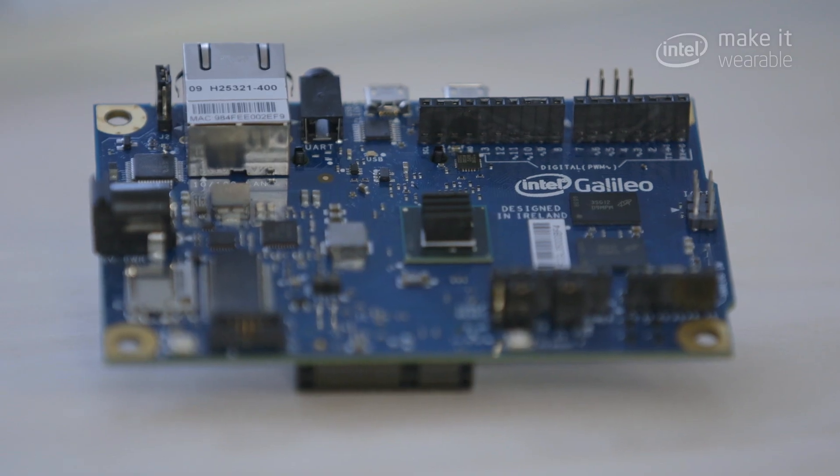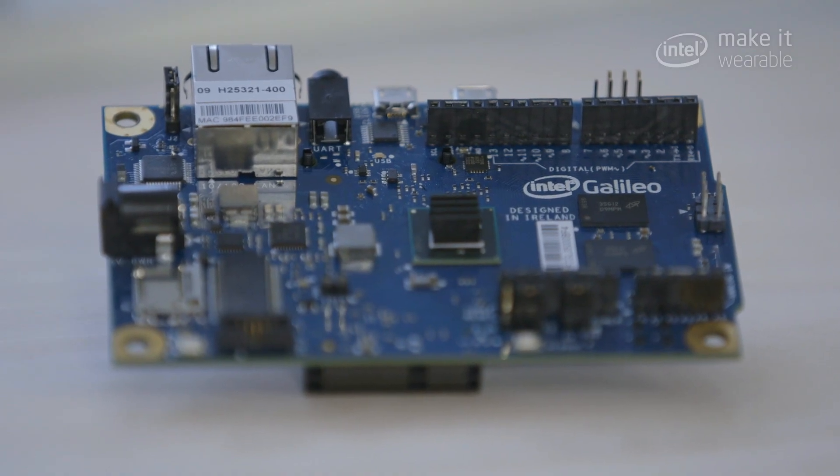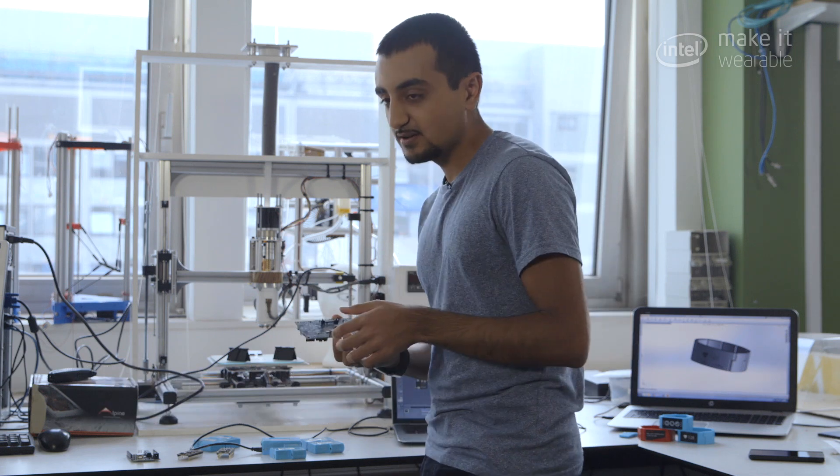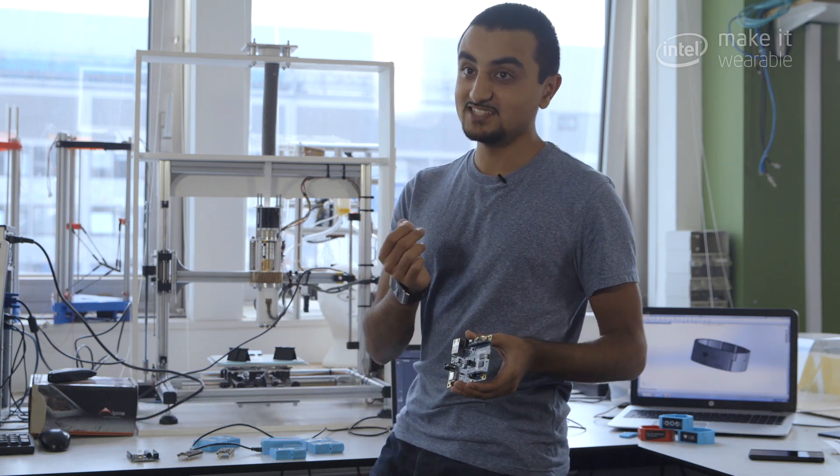This is a Galileo board. This is very similar to what we're going to use in our end product. So that is the Edison. Very similar architecture, but the Edison is the size of an SD card.